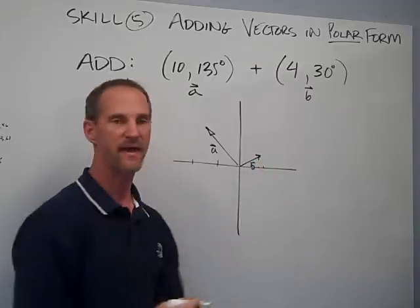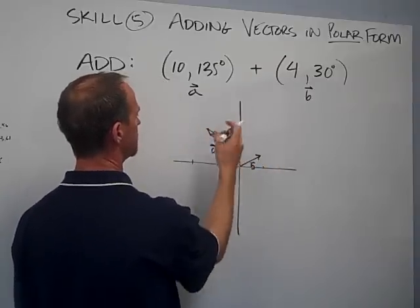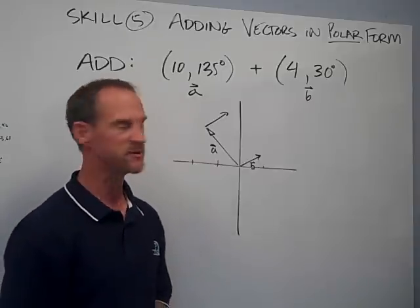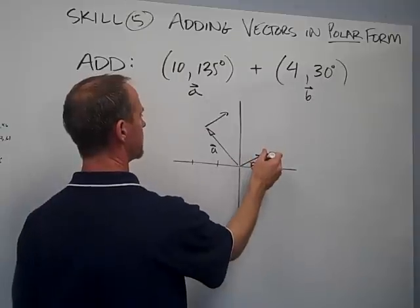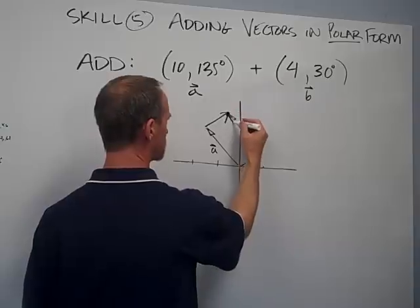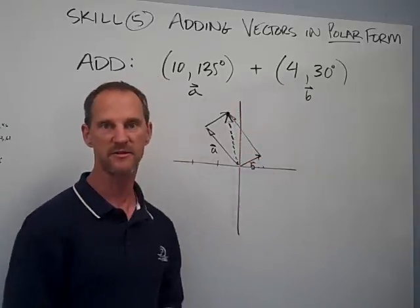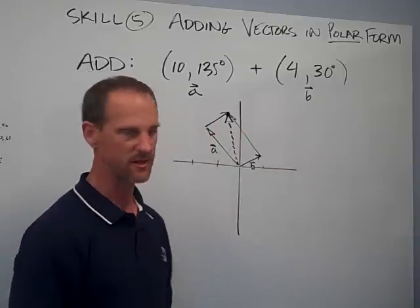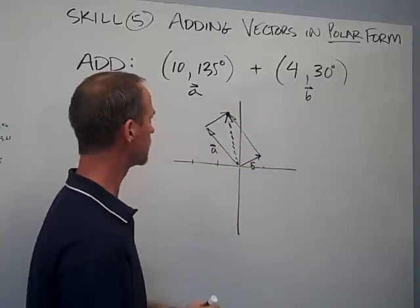To add them, we pick up the tail and the head and put it tail to head. When I pick it up and place it there, it lands approximately there. Or I could have picked up this one and put it there — that's called the parallelogram method. Either way, I wind up at about this location. My resultant vector is something like that, placing it in the second quadrant, maybe around 100 degrees. We can predict that length will be somewhat longer than 10.